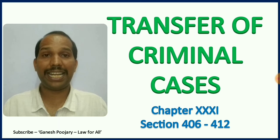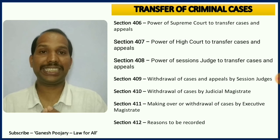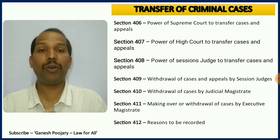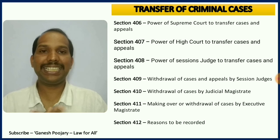Let's get into the first slide. Let us try to understand the entire chapter in brief. The first three sections — section 406, 407, and 408 — deal with the power of the court to transfer and appeal, that is Supreme Court, High Court, and the Session Court. The next three sections, 409 to 411, deal with withdrawal of cases and appeals by session judge, judicial magistrate, and executive magistrate. Section 412 deals with reasons to be recorded.